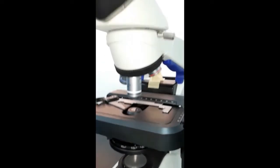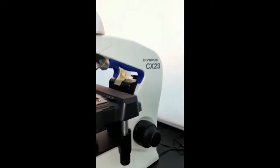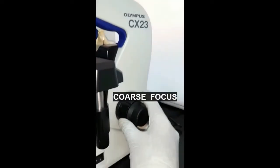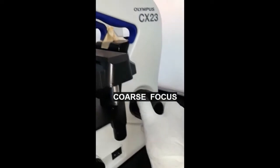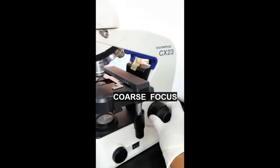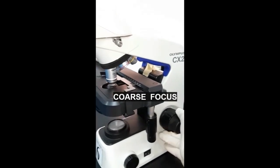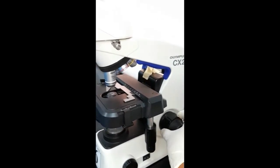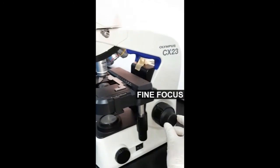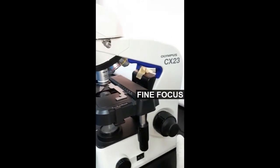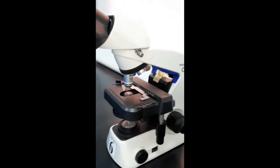The next part is the coarse focus, also called the coarse adjustment knob. It helps to raise and lower the stage. The coarse adjustment knob moves the stage quickly. Near the coarse focus, you can see the fine focus. It fine-tunes the image of the specimen and helps to view the image more clearly.